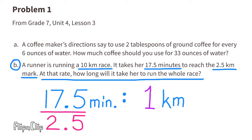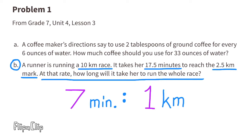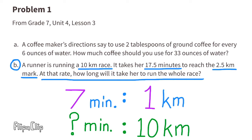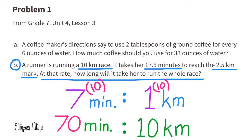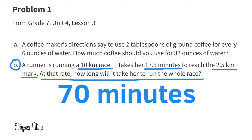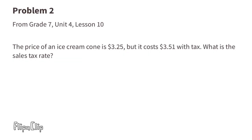We divide the other side by 2.5 as well: 17.5 minutes divided by 2.5 equals seven minutes. So it takes seven minutes to run one kilometer. The whole race is 10 kilometers. 10 divided by 1 is 10, so we multiply both sides by 10. Seven minutes times 10 equals 70 minutes. At this rate, it'll take the runner 70 minutes to run 10 kilometers.